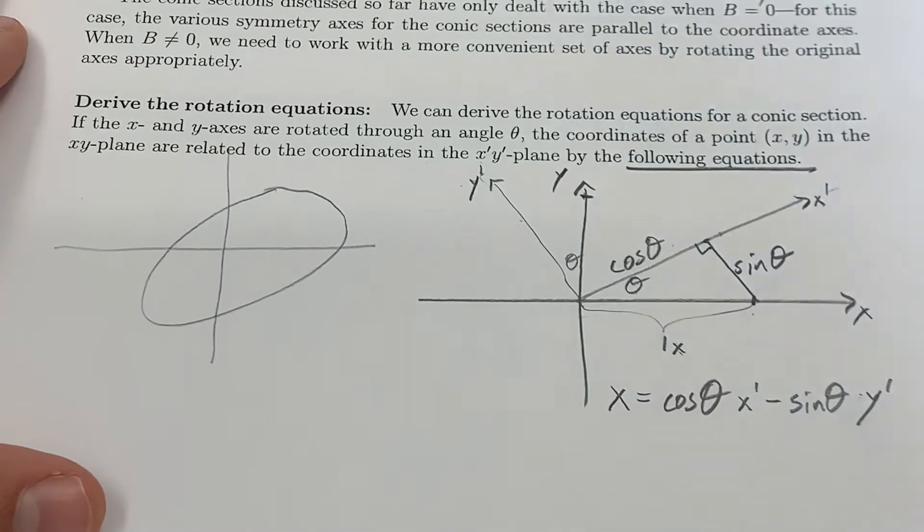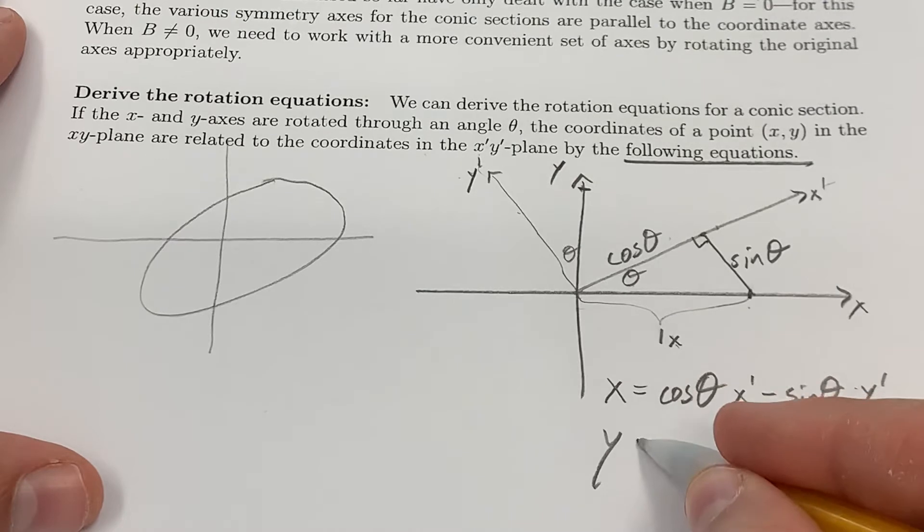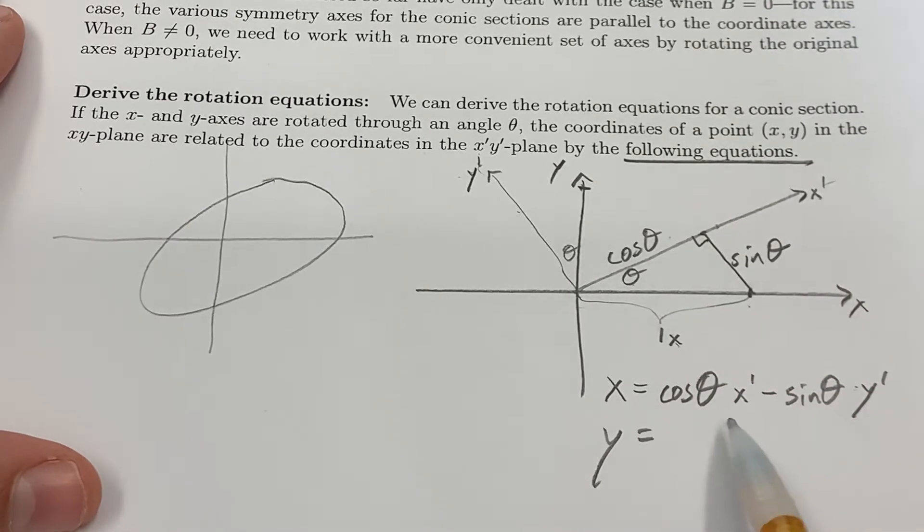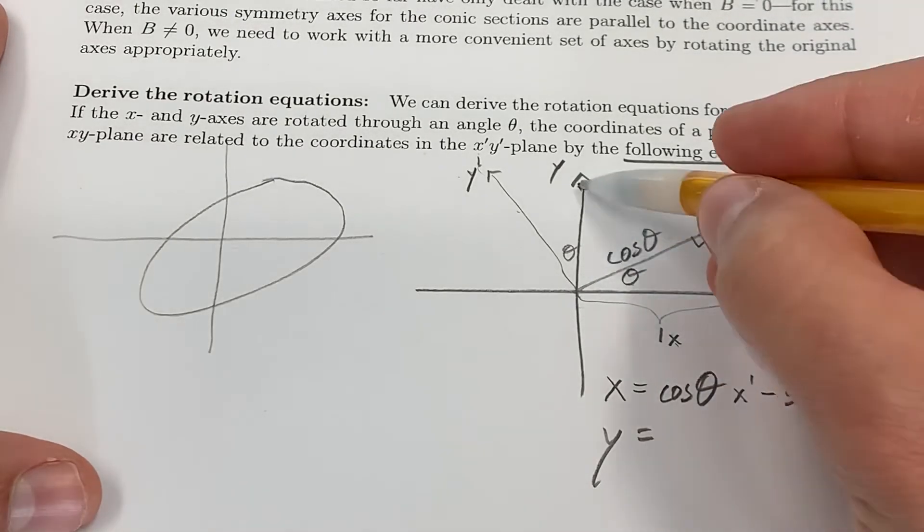Okay? And the second equation that I have is, to get to y, I guess I would go, and it might be most natural here since I'm thinking of it this direction, I'd go a certain distance in the y′ direction.